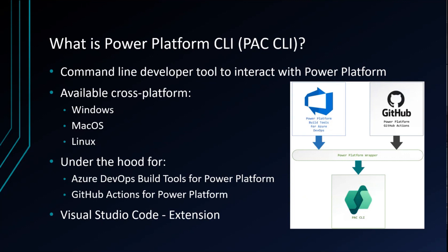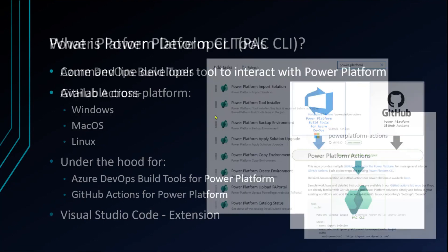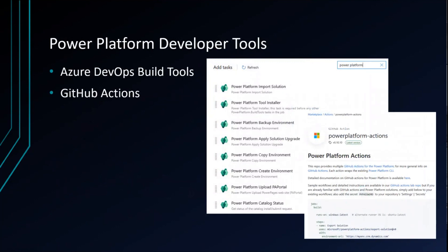You can also use it in Visual Studio Code as an extension, and we'll have more things coming. You can use it in Azure DevOps Developer Tools Build Tools and GitHub Actions for Power Platform. When building a pipeline in Build Tools, look for Power Platform Build Tools — I encourage you to use version 2.0. We also have Power Platform Actions in GitHub Actions.